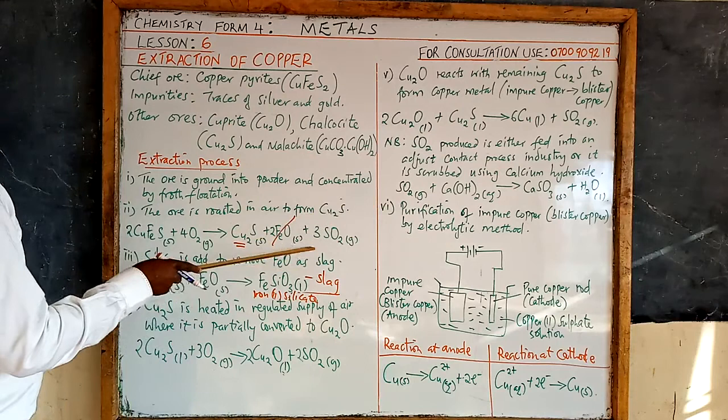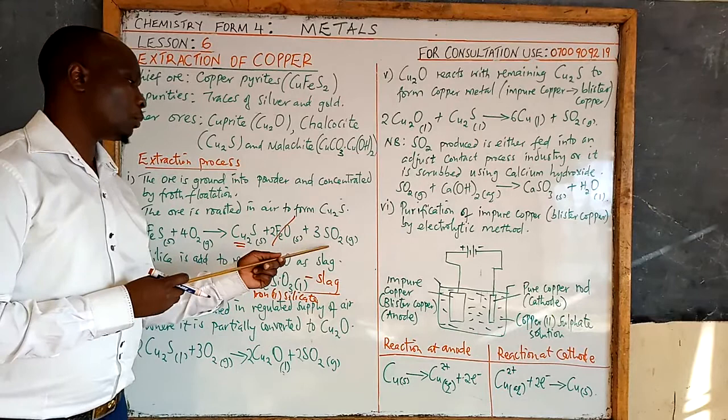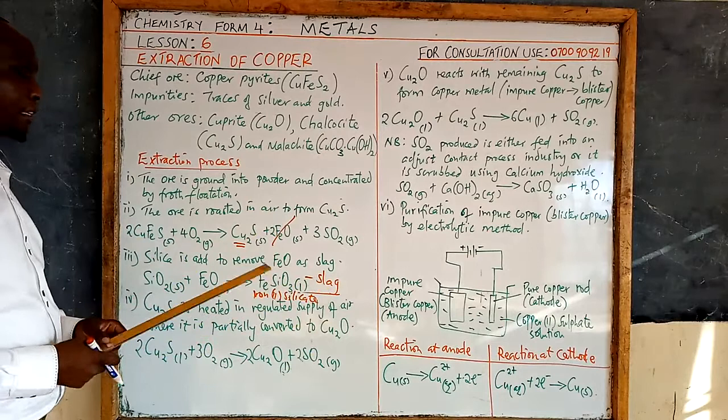Sulphur dioxide produced must not be allowed into the atmosphere, as it is acidic. It can lead to formation of acid rain, which has many adverse effects on both plants and animals, and can also worsen respiratory illnesses.